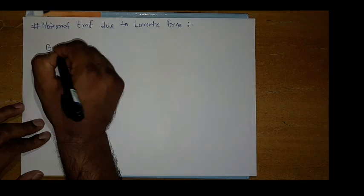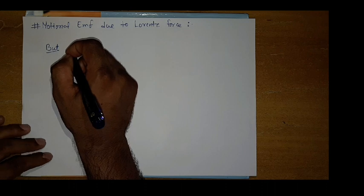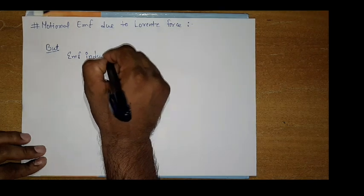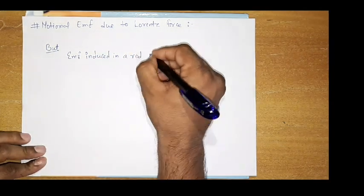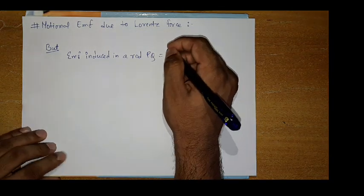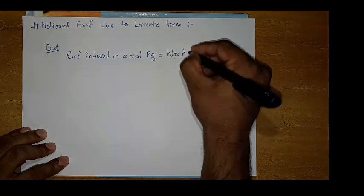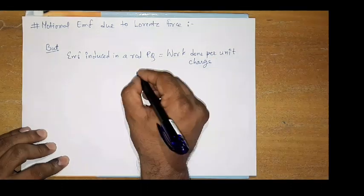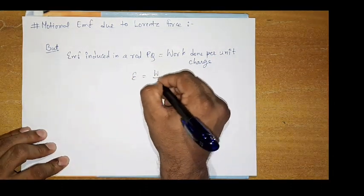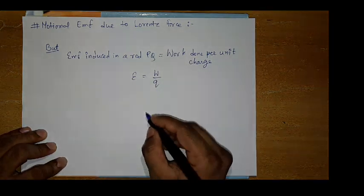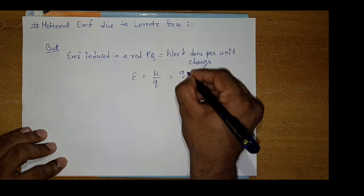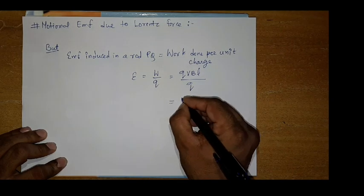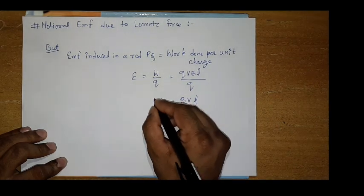But EMF induced in a rod PQ is equal to work done per unit charge. That is epsilon is equal to W by Q. Work done upon unit charge. What is work done here? It is QVBL upon Q. So which is BVL. Epsilon is equal to BVL. It is same like the motional EMF which is induced by Faraday's law.